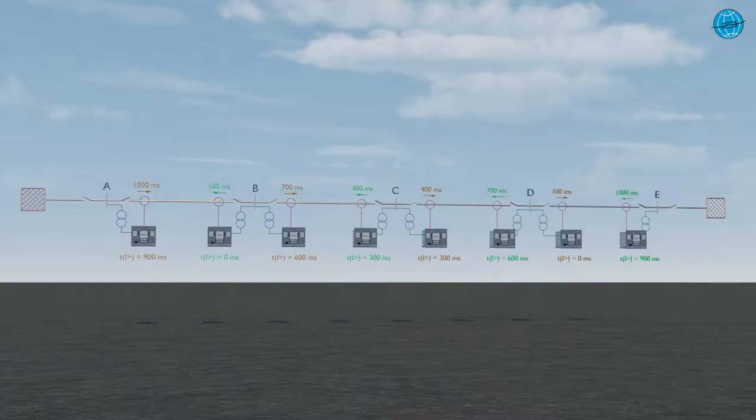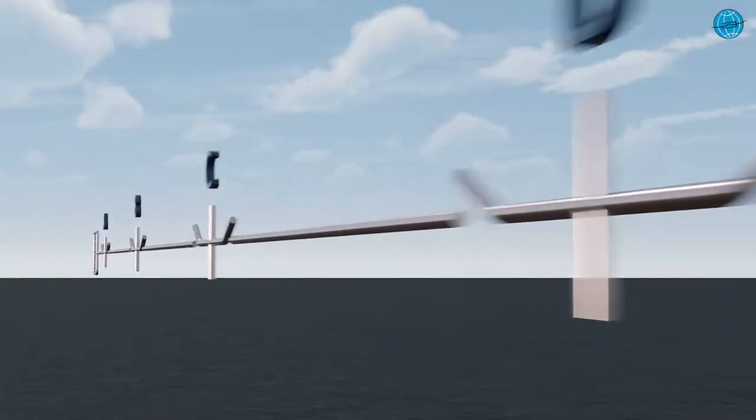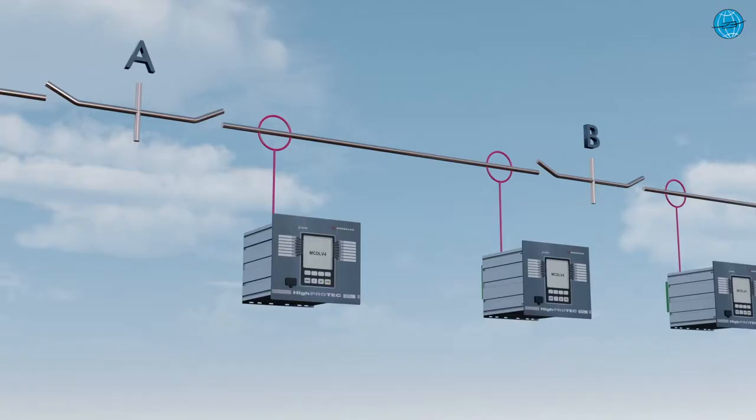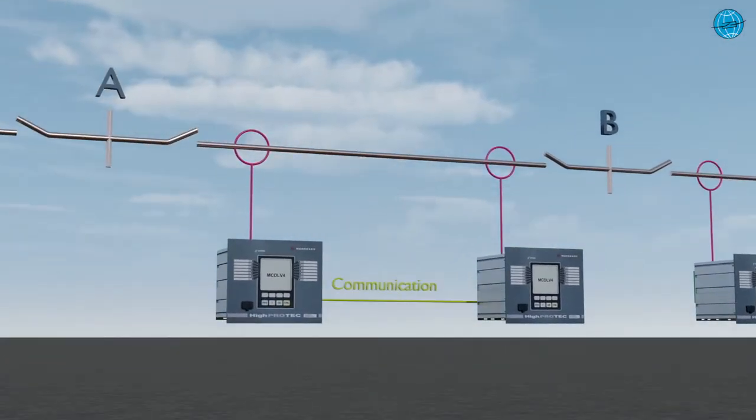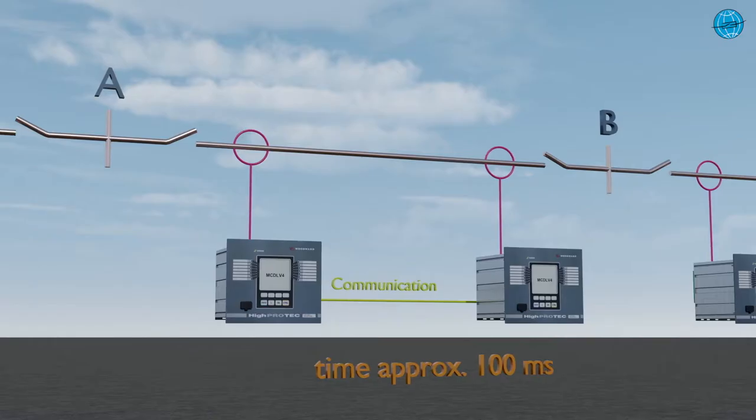Line differential protection endures both, selectivity and speed. With line differential protection, each section is protected absolutely selectively with two protective devices. The installation locations of the current transformers determine the protected area. No voltage transformers are required, but additional communication connections between the devices have to be considered. Default clarification times on each line section are below 100 milliseconds and theoretically any number of line sections can be protected fast and selectively.